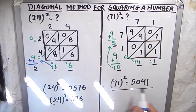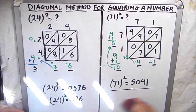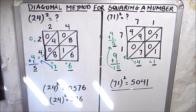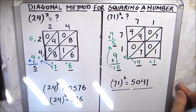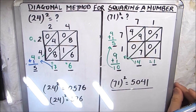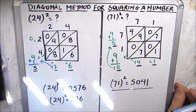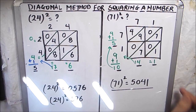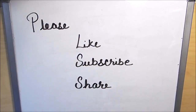This is how you can find the square of any number using the diagonal method. Thanks for watching — please like, subscribe, and share my videos.